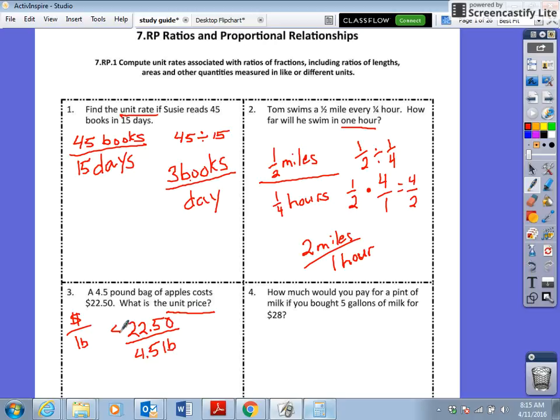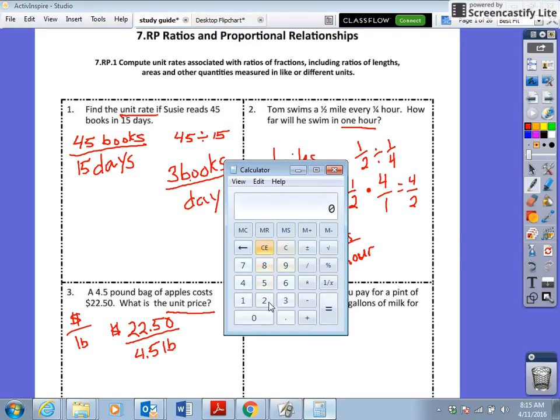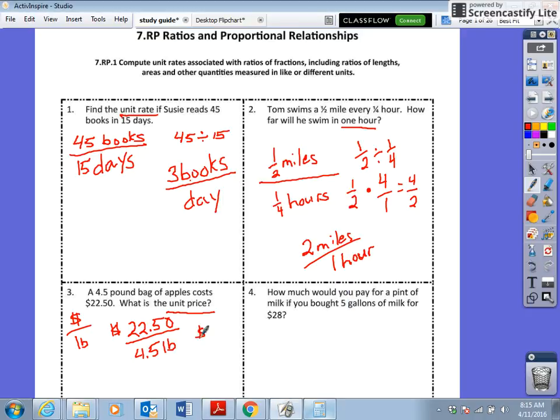I'm going to use my calculator to do this because it's decimals. Clear, 22.50. Make sure you pay attention to that decimal point. The one good thing about having the calculator on the computer is you can see your decimals really well. Divided by, remember it's a slash, and see it tells you what you just did, 4.5. This is really important to pay attention to because if you get the answer wrong, go back and look and see what it says. Maybe you accidentally pushed a plus sign or a multiplication sign instead of a division sign. So that equals five, so it came out even, which is great. So $5 per one pound, $5 per pound. For one pound it will cost $5, which is actually kind of a lot for apples, by the way.